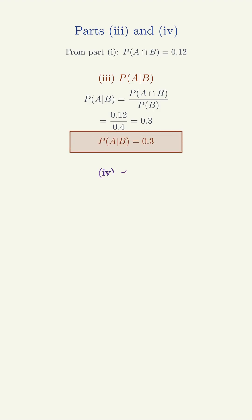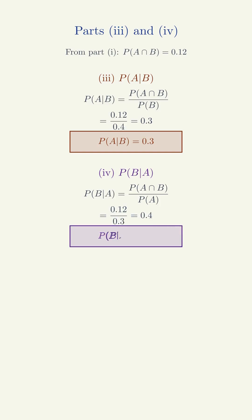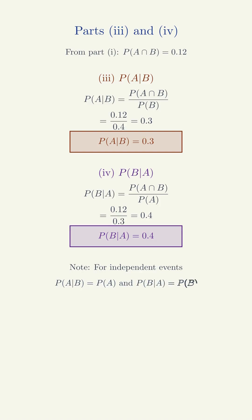Part 4: P of B given A equals P of A intersection B over P of A equals 0.12 over 0.3 equals 0.4. Note: for independent events, P of A given B equals P of A, and P of B given A equals P of B.